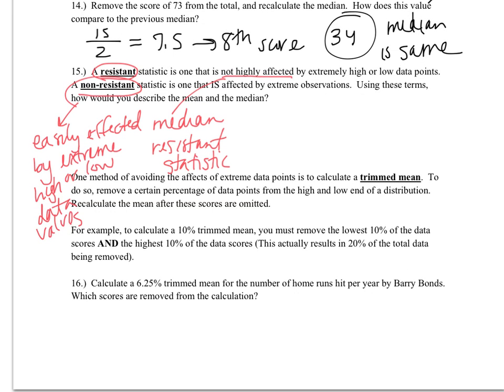So one way to get around this is to calculate what is called a trimmed mean. And in a trimmed mean, you remove a certain percentage of data points from the high and the low end of your distribution. It's kind of like if you took away someone's best score and someone's worst score and then figured out where they worked in the middle. And then once we've done that, we're going to recalculate the mean after these scores have been taken out.